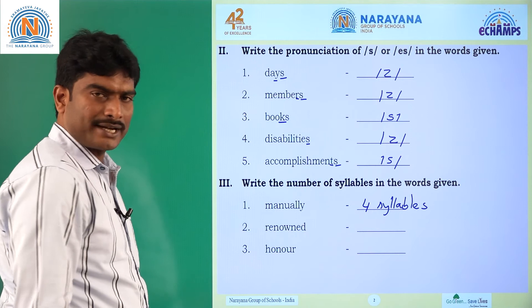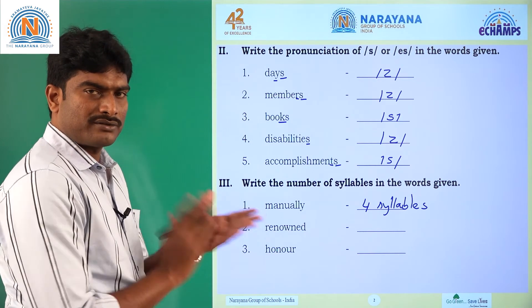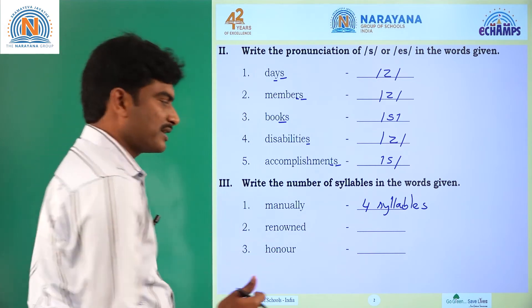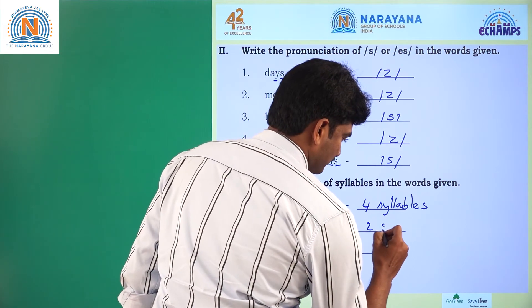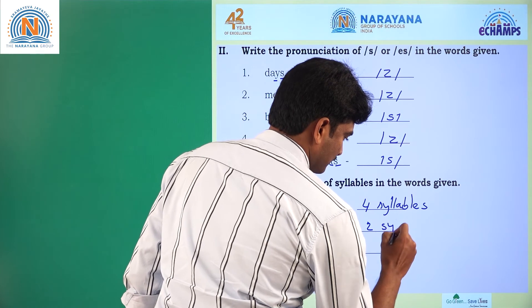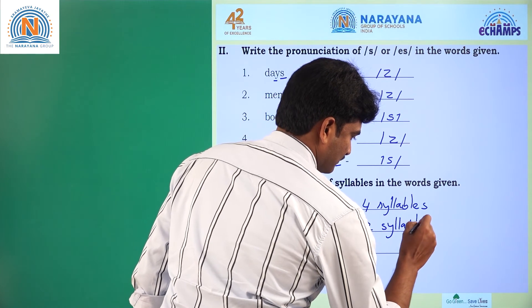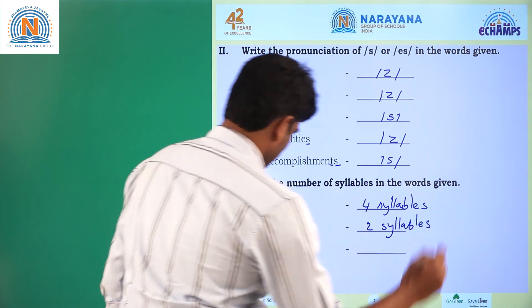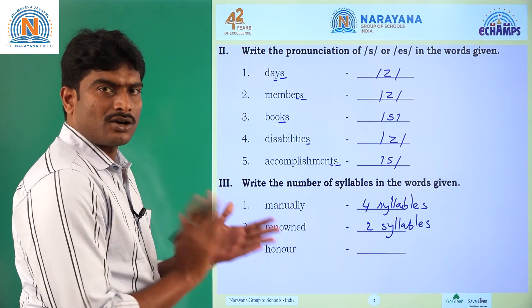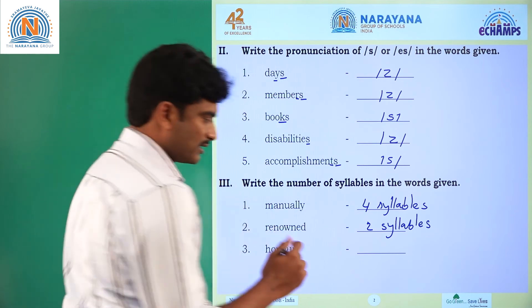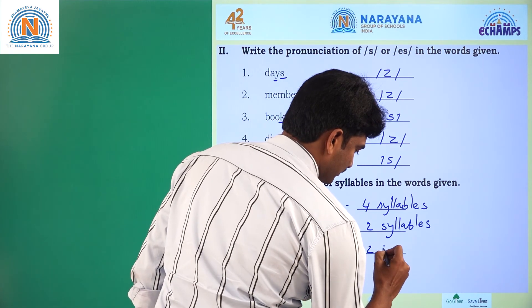Question number 2: renowned. Renowned — here 2 syllables. Question number 3: owner. Owner — here also the answer is 2 syllables.